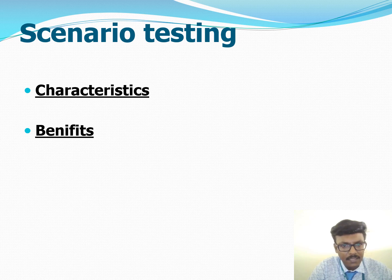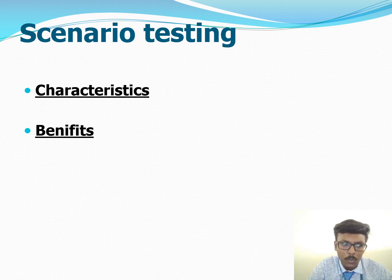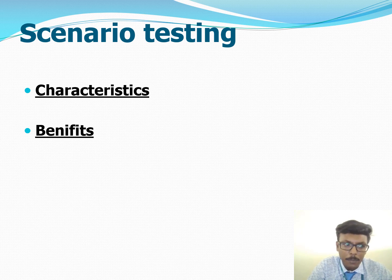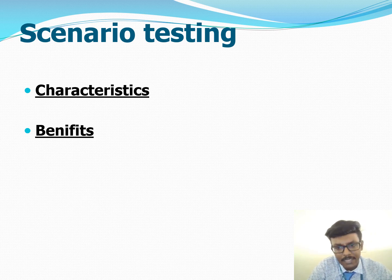Let's see some characteristics of scenario testing. The test is based on a coherent story about how the program is used, including the goals and emotions of people. The story is credible — stakeholders will believe that something like it probably will happen. Failure of the test will motivate a stakeholder with influence to argue it should be fixed. The story involves complexity: complex use of the program, a complex environment, or a complex set of data.